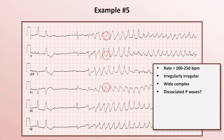We have an extremely fast, irregularly irregular, wide-complex tachycardia with possible dissociated P-waves. This is polymorphic VT.